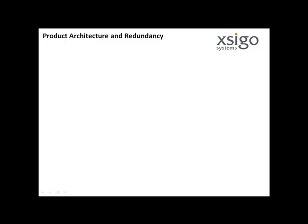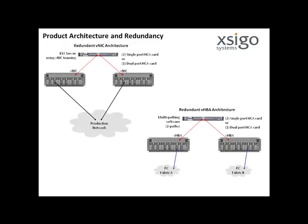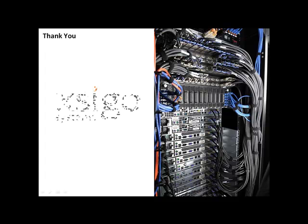Achieving full data path redundancy requires two SEGO I.O. Directors. Virtual interfaces are configured on each I.O. Director and presented to the servers. Multipath software on the host manages the two data paths. These redundant architectures also require redundant InfiniBand fabrics. As is the case with redundant SAN architectures, independent InfiniBand fabrics provide complete hardware and data path redundancy.